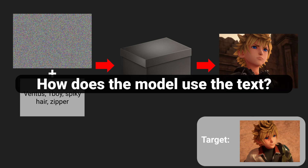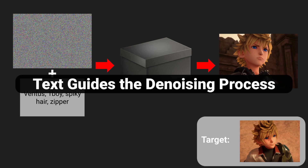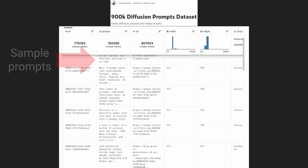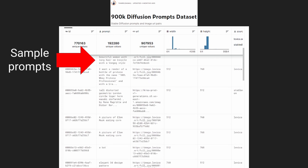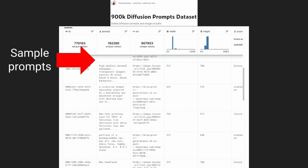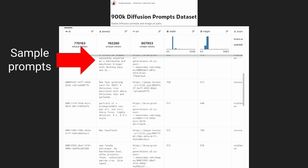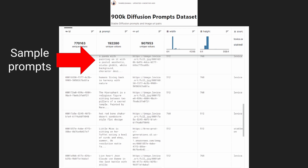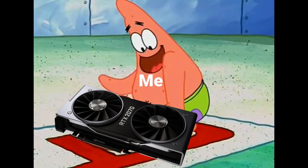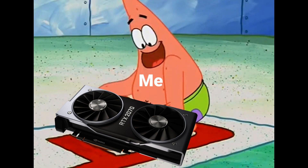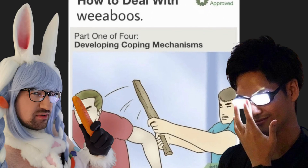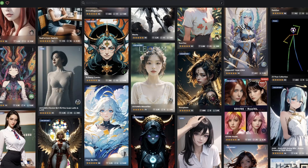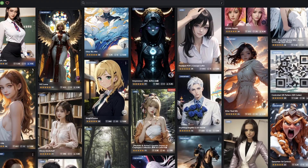So where does the text come in? Basically, the text guides the denoising process. The data used to train these models needs to be a combination of images plus their prompts. Without text, the model would just be creating random images based on the data. This type of model is way too computationally expensive for me to even want to attempt to train — I'll spare my graphics card the pain.